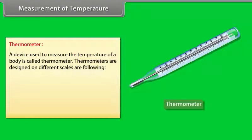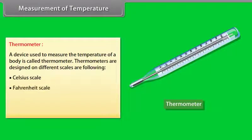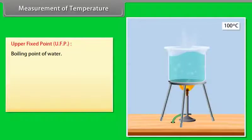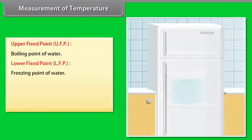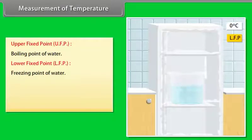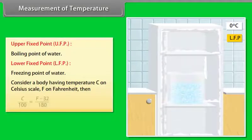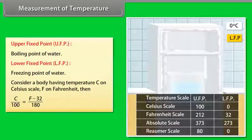A device used to measure the temperature of a body is called a thermometer. Thermometers are designed on different scales: Celsius scale, Fahrenheit scale, Kelvin scale, and Reaumur scale. The boiling point of water is known as the upper fixed point, and the freezing point of water is known as the lower fixed point. For a body at temperature C on the Celsius scale and F on the Fahrenheit scale: C/100 = (F − 32)/180.